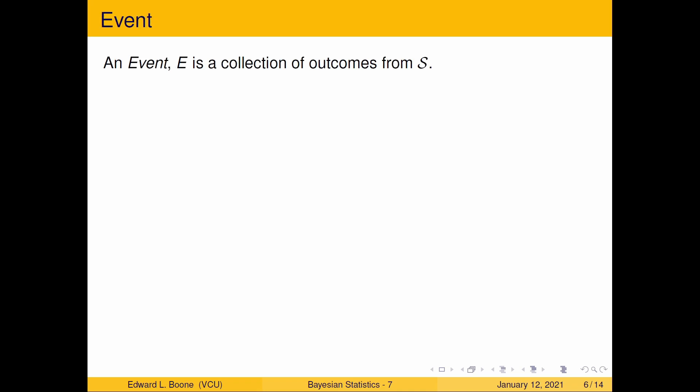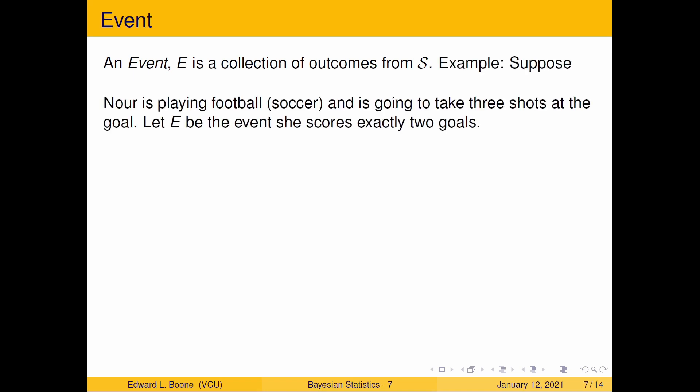An event E is a collection of outcomes from S. I know it's very abstract at this point, but you'll see as we go along that this makes absolute sense — it just takes a little bit of getting used to. For example, Nora is playing football and she is going to take three shots at the goal. Let E be the event that she scores exactly two goals. In order to understand this event, we need to know what the sample space is.